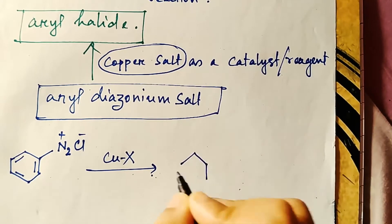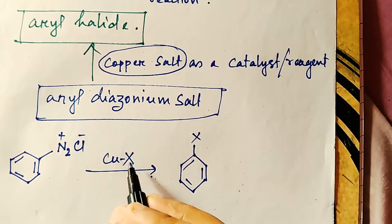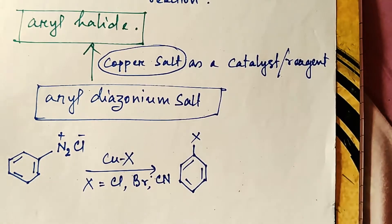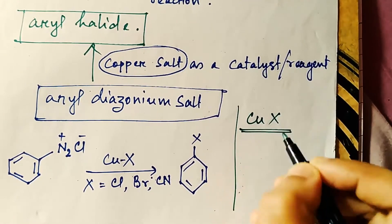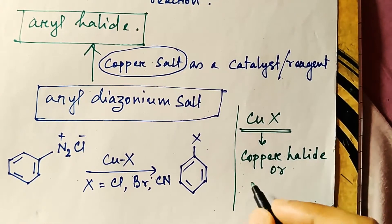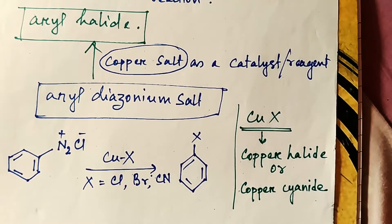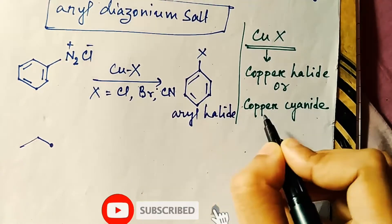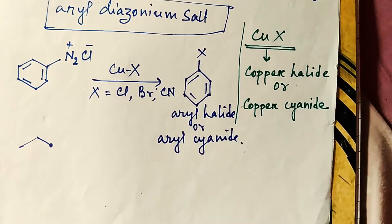...then you will get an aryl halide. Here X can be chlorine, bromine, or cyanide. The CuX portion can be copper halide or copper cyanide. When it is copper halide, the product will be aryl halide; when it is copper cyanide, the product will be aryl cyanide.